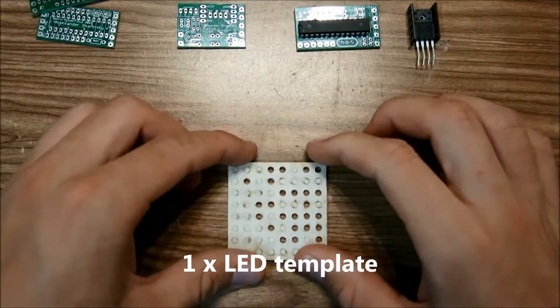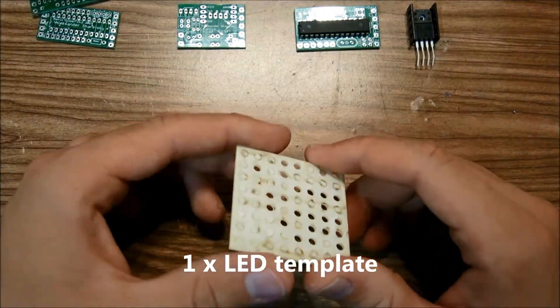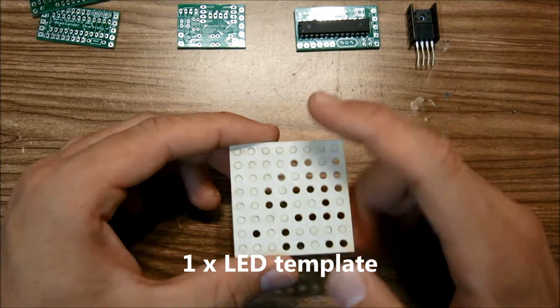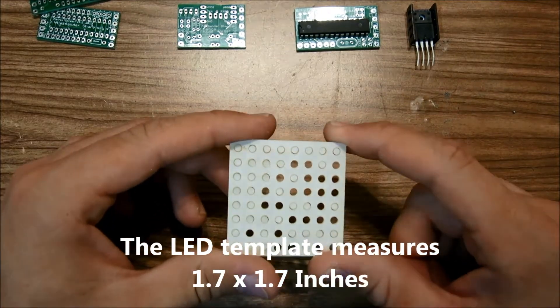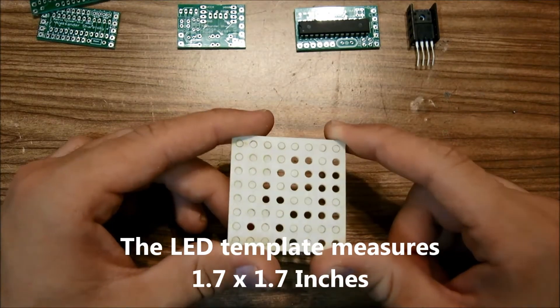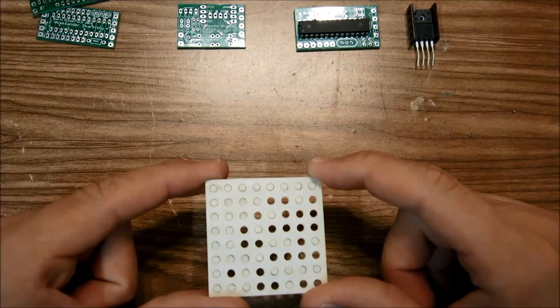A laser cut template is included. Yours might be clear or might be this opaque color. This measures 1.7 by 1.7 inches, so if you really wanted to you could mount this into a different pair of goggles than the ones that are provided with the kit.